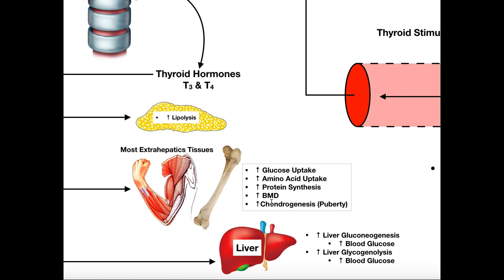Thyroid hormone also stimulates increased bone mineral density — individuals with hypothyroidism (low thyroid hormone) are at increased risk for osteoporosis. During puberty, thyroid hormones also stimulate chondrogenesis: bones grow in length using cartilage, so thyroid hormones stimulate cartilage synthesis to allow bones to grow in length. This of course only occurs during puberty, coinciding with a surge in both thyroid hormones and growth hormone during that period.